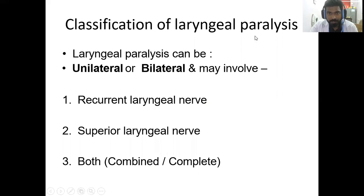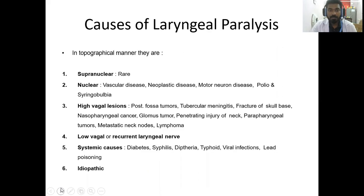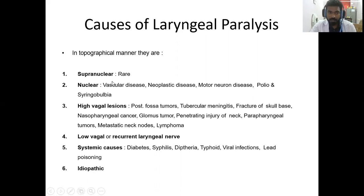Laryngeal paralysis can be unilateral or bilateral and may involve the recurrent laryngeal nerve alone or the superior laryngeal nerve alone, or it can be a combined paralysis involving both. The causes are related to the nerve starting from the brain — there is a supranuclear lesion (above the nuclear level), a nuclear lesion (at the level of the nucleus), a high vagal lesion, and a low vagal lesion, as well as systemic diseases which can also cause laryngeal paralysis.